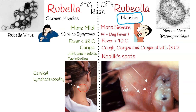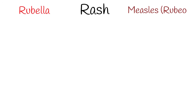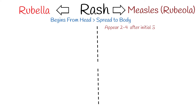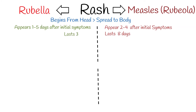Rashes are the most important characteristics of both of these infections. The rash in both cases begins on the head or face and then spreads to other parts of the body, but the coloring and texture differ. The measles rash appears 2-4 days after the initial symptoms and lasts for up to 8 days. The rash is said to stain, changing color from red to dark brown before disappearing.